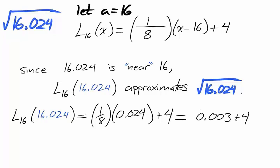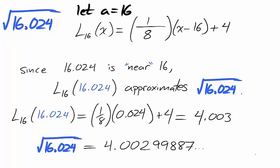We plug 16.024 into our linearization. Subtract, divide 0.024 by 8 and get 0.003, to which we add 4. Our linearization anticipates a value of 4.003 for the square root of 16.024, which happens to have an actual value very close to 4.003.